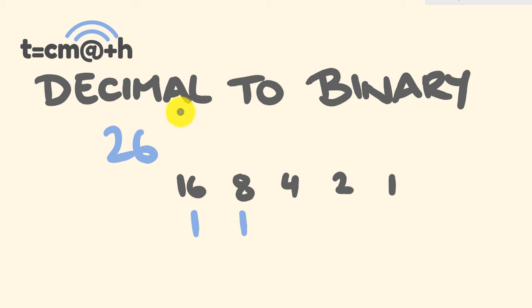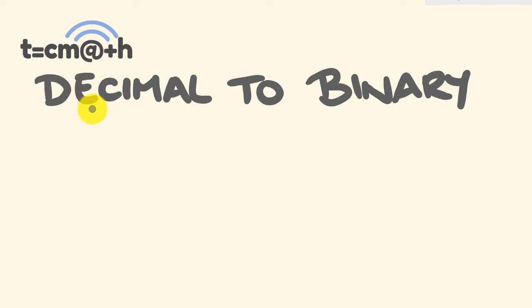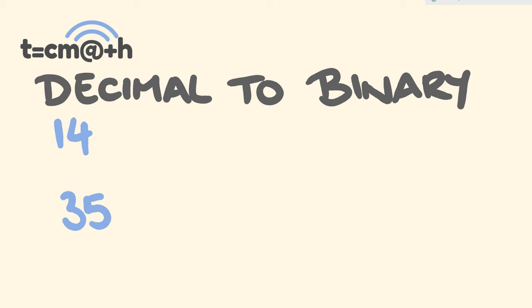What number do we need to add to 24 to get 26? It's 2. So the remaining numbers are going to have zeros. The binary equivalent of 26 is 1, 1, 0, 1, 0. I'll give you a couple of examples — let's convert 14 and 35 across to their binary equivalents.